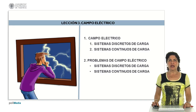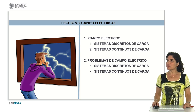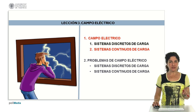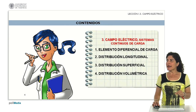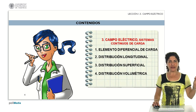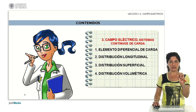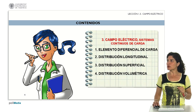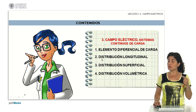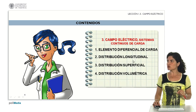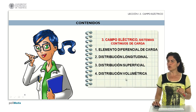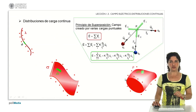Continuing with the study of the electric field, we are now going to focus on how to calculate that electric field when what we have in space are continuous systems of charge. We will introduce the charge differential element and apply it to different distributions: a longitudinal distribution, a surface distribution, and a volumetric distribution of charge.